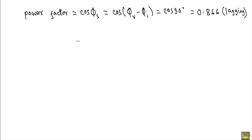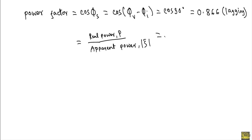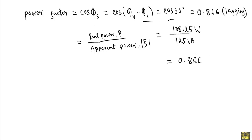We can also calculate the power factor by dividing real power P by apparent power S: P = 108.25 watts and S = 125 volt-amperes, giving 108.25 / 125 = 0.866. So the power factor is 0.866. You can use either formula to calculate the power factor.